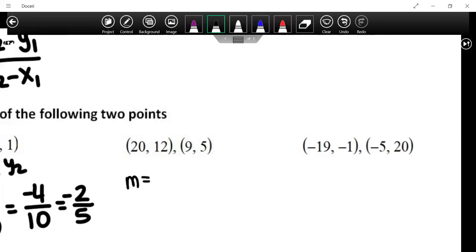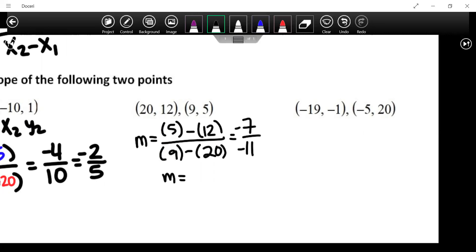Here we go. I'm going to do this a little bit faster. Y2 minus y1, x2 minus x1. 5 minus 12, negative 7. 9 minus negative 20, negative 11. Again, can you leave it like that? Yeah, but just simplify it out. Positive.